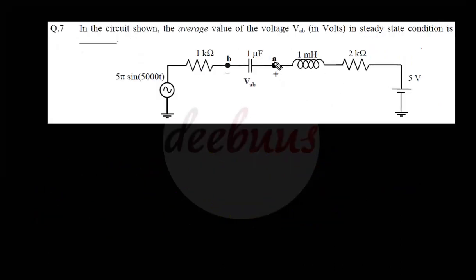Moving to the next question: in the circuit shown, the average value of the voltage Vab in volts in steady state condition. We have to calculate the average value of voltage across the 1 microfarad capacitor. The circuit has an alternating voltage source, a DC voltage source, along with resistor, inductor, and capacitor.